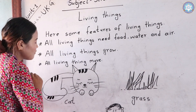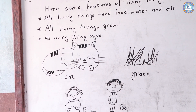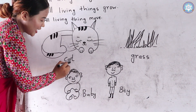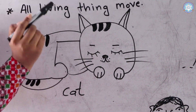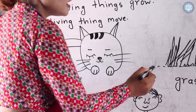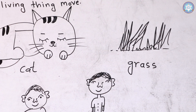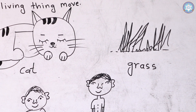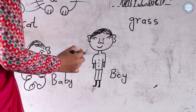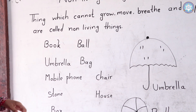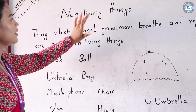Here are some examples of living things in pictures. C-A-T, cat. Look here — this is a cat, and this is a living thing. And this one is grass. Grass grows. And these are babies. And this one is a boy. Do you understand?